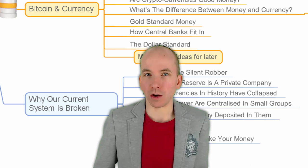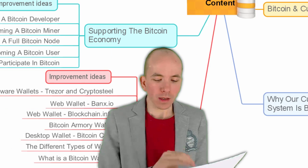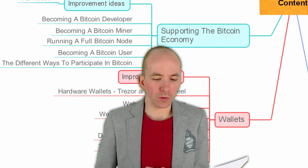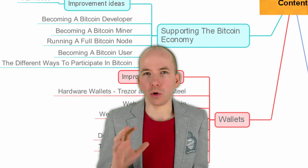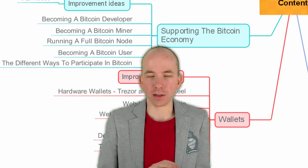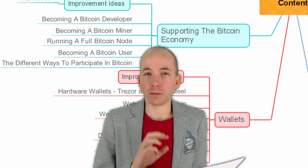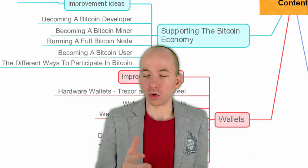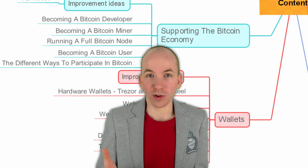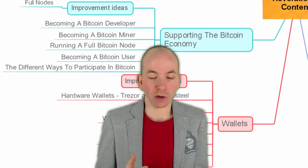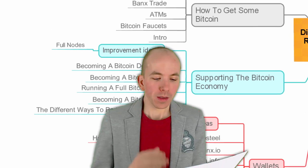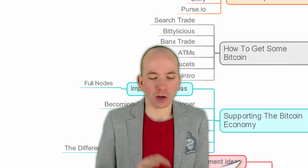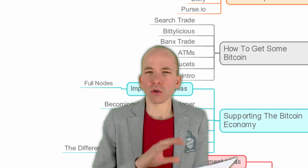From there we'll go on to module five, which is on the more practical side of things. We'll go into Bitcoin wallets — you need a Bitcoin wallet in order to store your money, just like in the real world. Right after that we'll go into how you can support the Bitcoin economy.